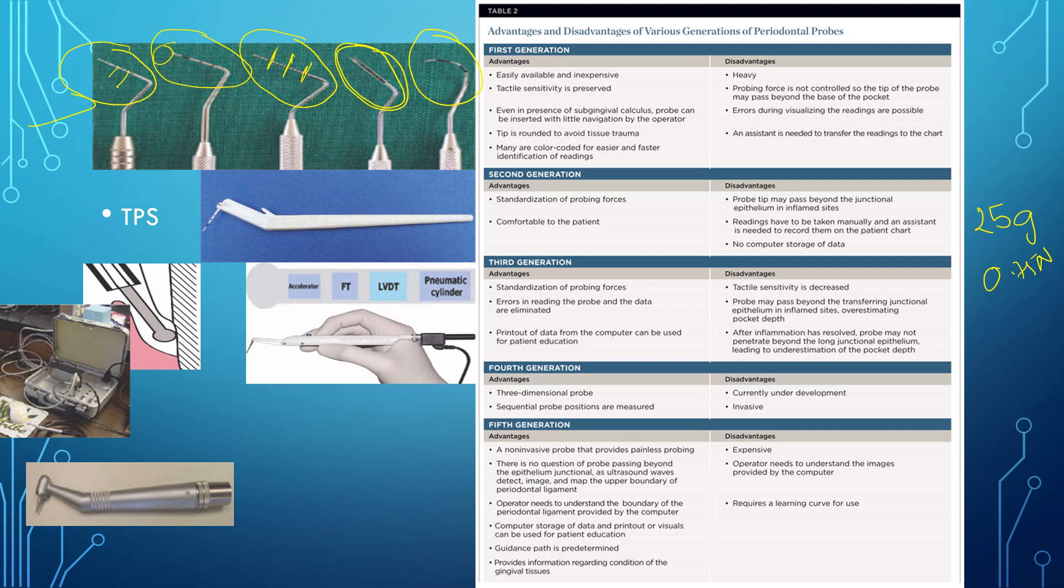So these are all the first generation probes. Now what are the disadvantages of them? They are heavier and the probing force cannot be calibrated because it depends on the operator. And the errors may be there in reading as well as the forces which are applied. So this was about the first generation probes.